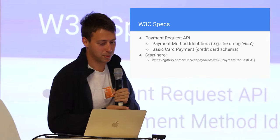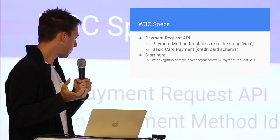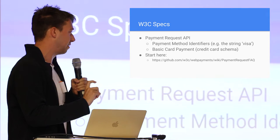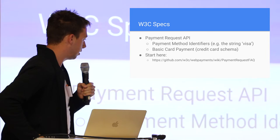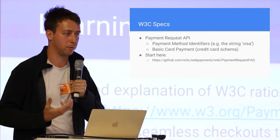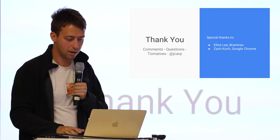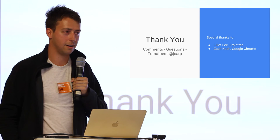W3C specs that are coming out: Payment Request API is the main one, and then there are sub-specs like payment method identifiers — which defines the schema of that credit card object — and basic card payment. They have a great getting-started page at the link, and more links for explanation of the rationale behind web payments. The two screenshots you saw were from Google and Apple's introductions of these technologies. Thank you to Elliott Lee and Zach Koch who helped me develop this talk.